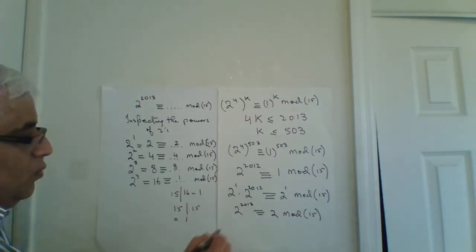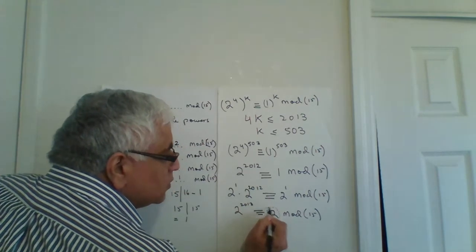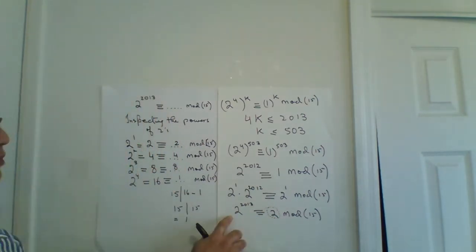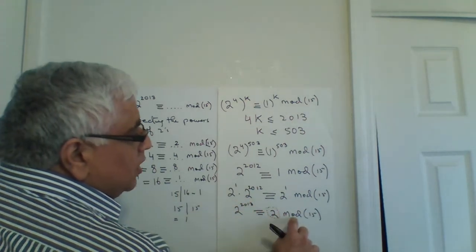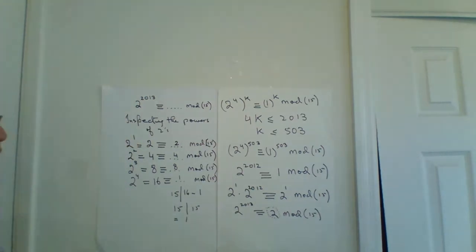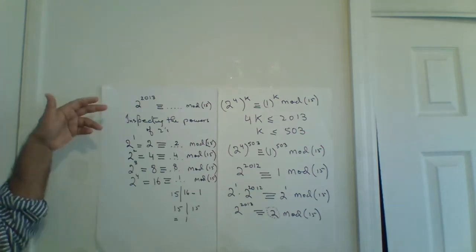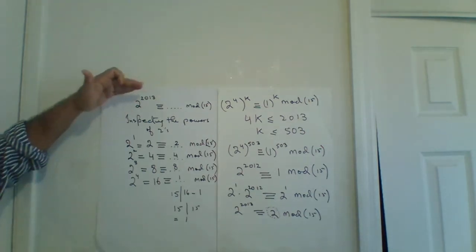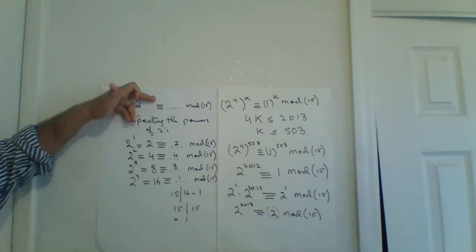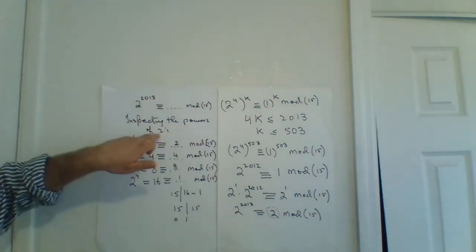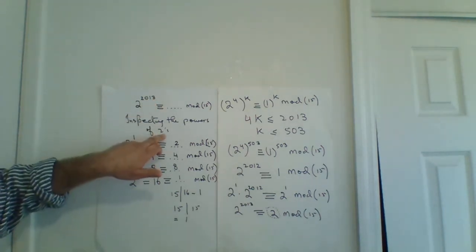We found our remainder: 2 to the power 2013 is congruent to 2 mod 15. Now I'll go through all the steps again. We have 2 to the power 2013. If we had 3 to the power 2013 we would inspect powers of 3, but since we have 2 to the power 2013, we inspect the powers of 2.